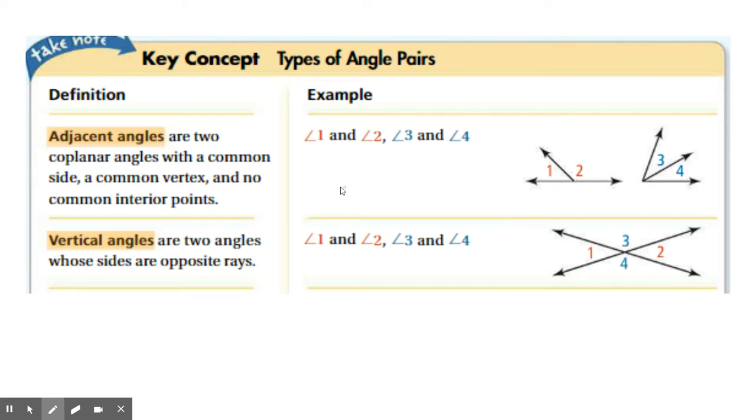Now, for me, when I think of adjacent, I think of the words next to, right? There are two angles that are next to each other, and there's no overlap. So keep that in mind. One angle is not overlapping the other angle. They're completely separate but next to each other. So again, angle 1 and 2 share this side. Angle 3 and 4 share this side, and they are completely separate. Awesome.